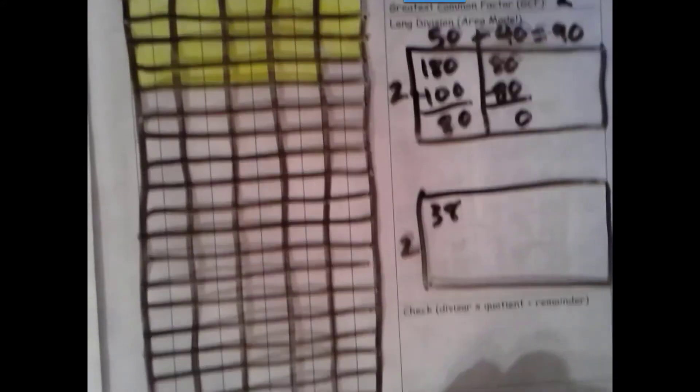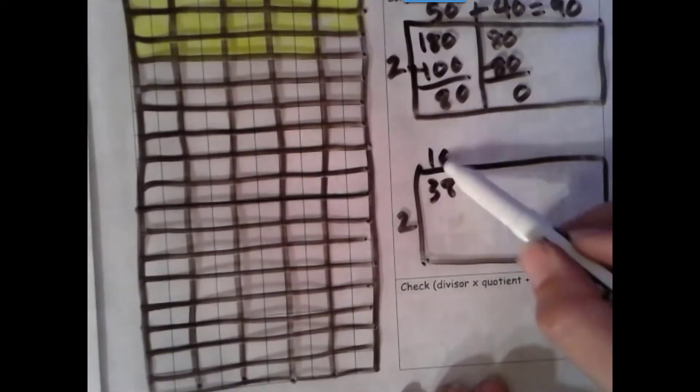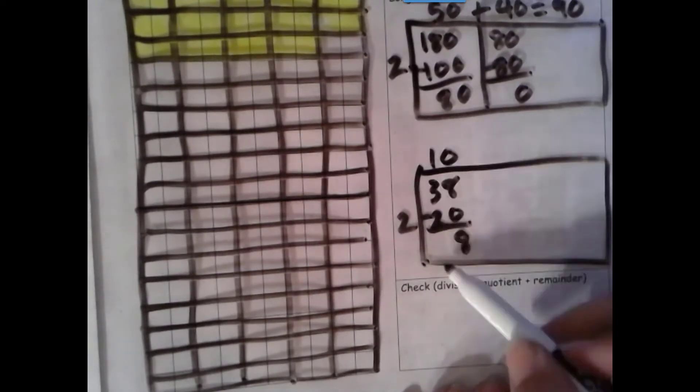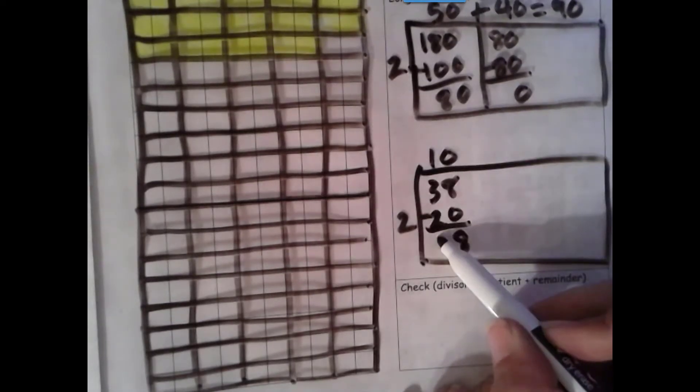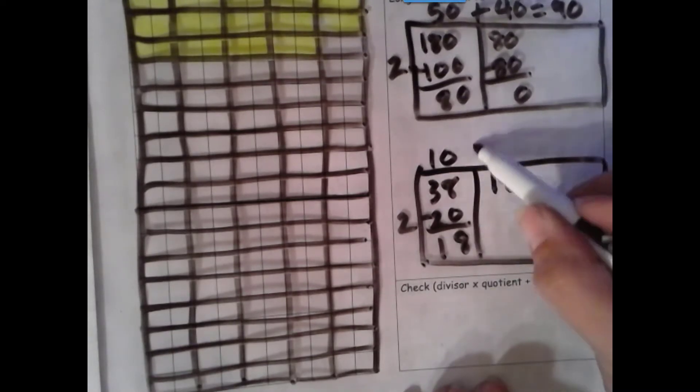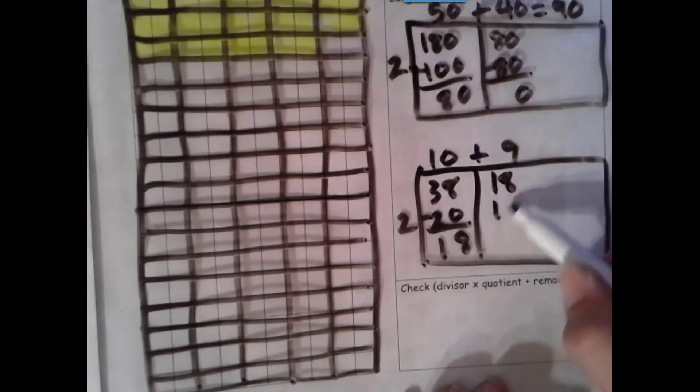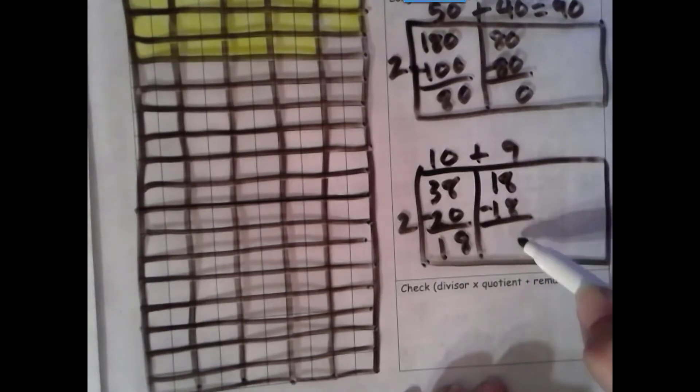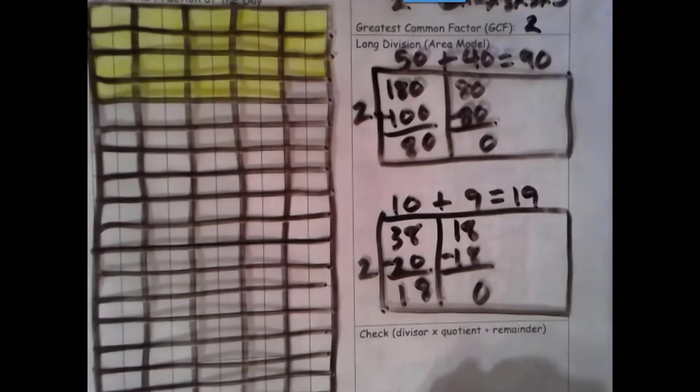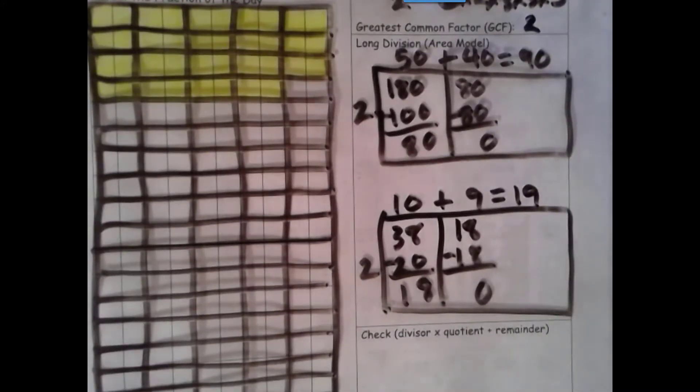Okay, here, 10 times 2 is 20. More on top, no need to stop. Number's the same—I mean, more on top, no need to stop. Bring the 18 up here. 9 times 2 is 18. Number's the same, zero's the game. 10 plus 9 is 19.